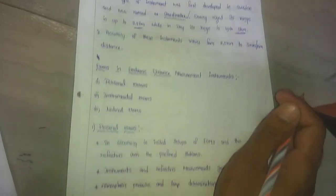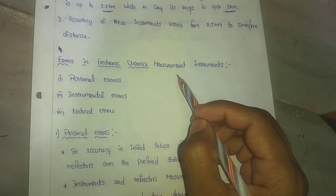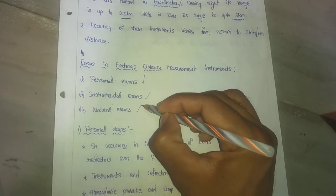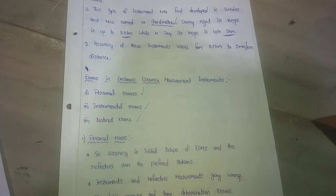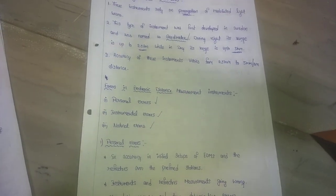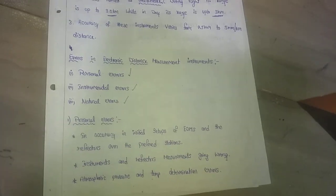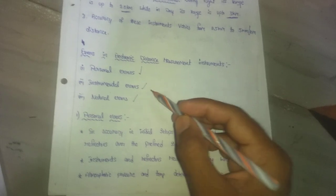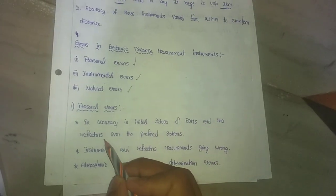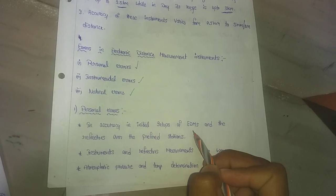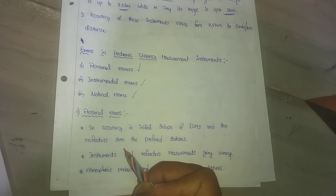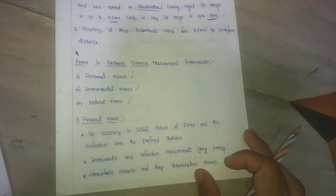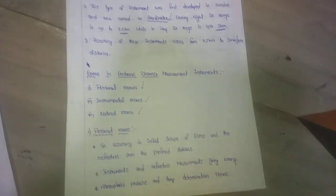Errors in electronic distance measurement: the first type is personal errors. Personal errors arise from inaccurate initial setup of EDM instruments and the reflectors at the preferred stations. These are human skill-related errors.